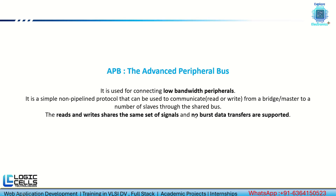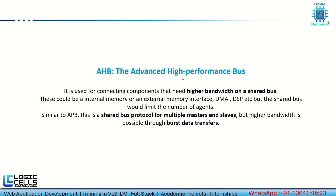AHB — Advanced High Performance Bus — connects components with higher bandwidth on a shared bus. High-bandwidth peripherals, internal memory, external memory, DMA, and DSPs can all use this shared bus. It supports multiple masters and slaves, and higher bandwidth is achieved through burst transfers — unlike APB which does not support burst data transfers.